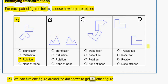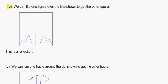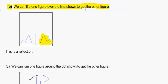Now let's look at B. In figure B, we can flip one figure over the line shown to get the other figure. We start with this figure and flip it over this line, like this, to get this figure.